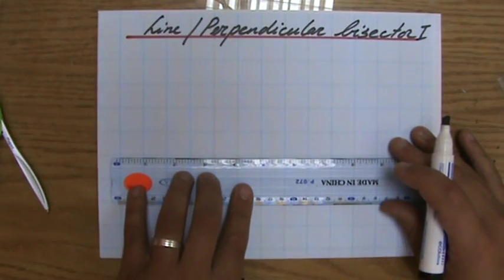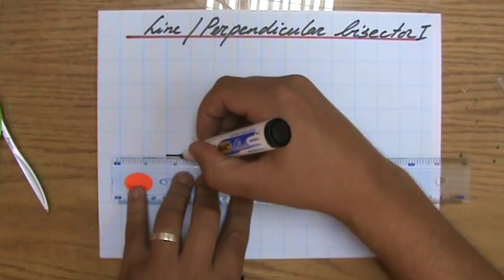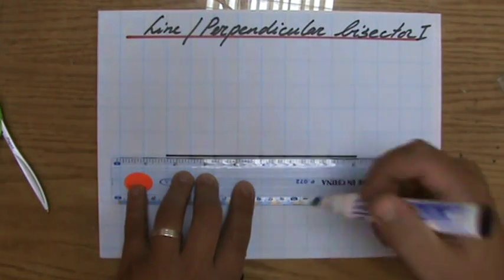And now we are going to bisect a line. Let's say I have a line of... let's do 8 centimeters. It's a line of 8 centimeters.